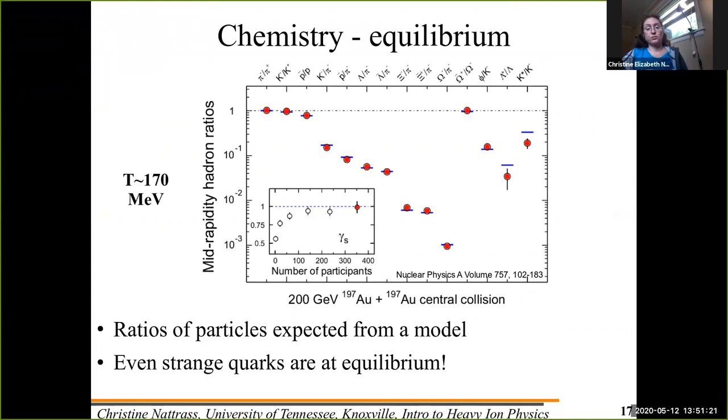When the system freezes out at chemical freeze out, you can compare those ratios of hadrons to a thermal model and you fit. And there's different models where they have the temperature as a parameter and where they have temperature and the degree to which strange quarks are in equilibrium.